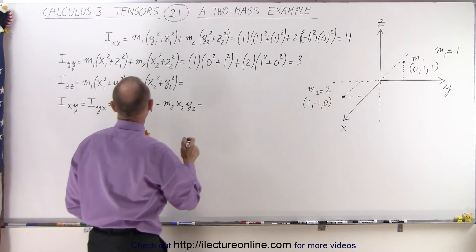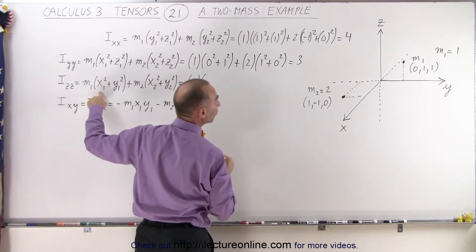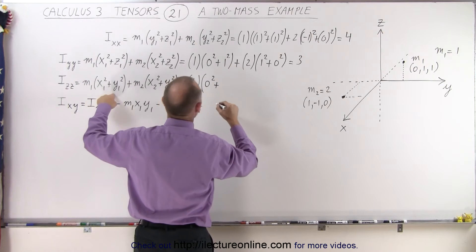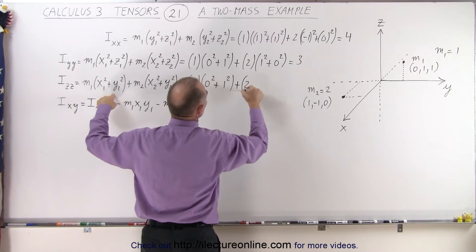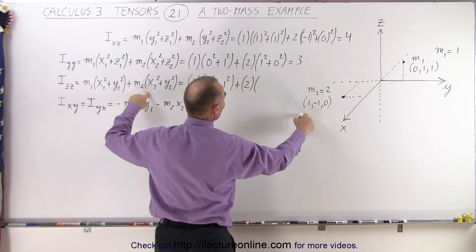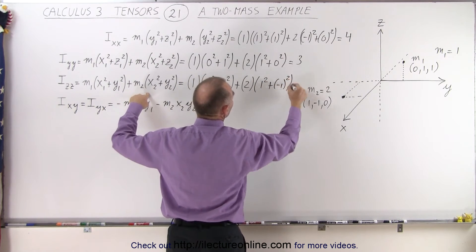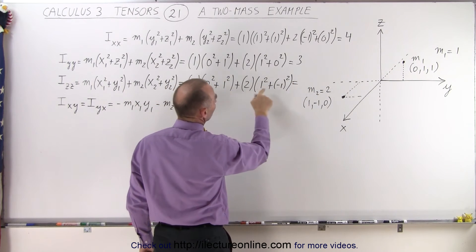Now we have the third diagonal element. So we have 1 times x1 squared, so that would be 0 squared plus y1, that would be 1 squared, plus 2 times x, that would be 1 squared plus a negative 1 squared. So that would be 1 times 1 plus...